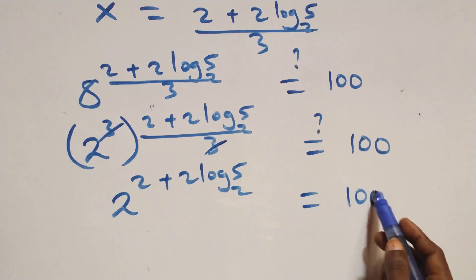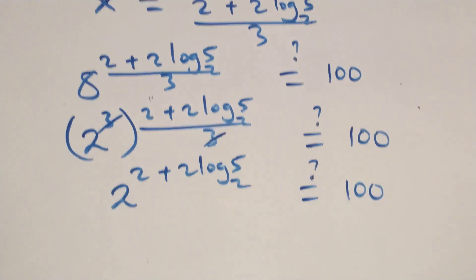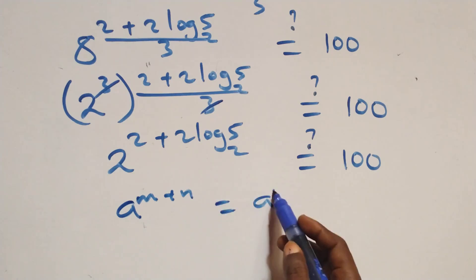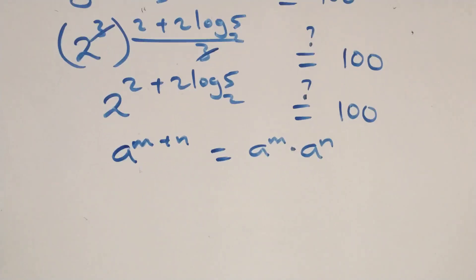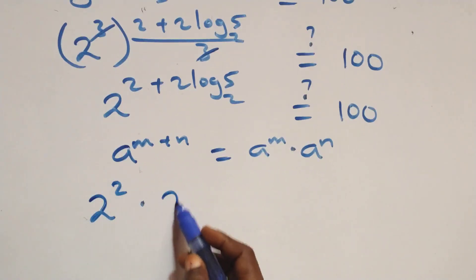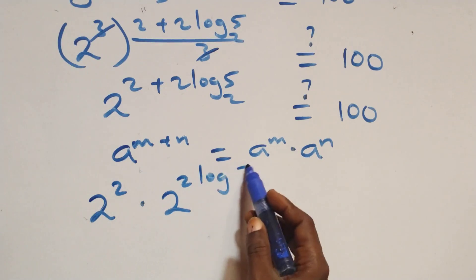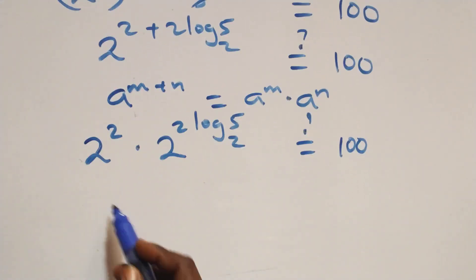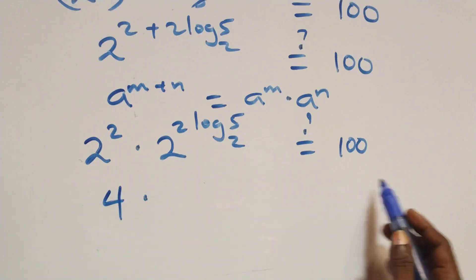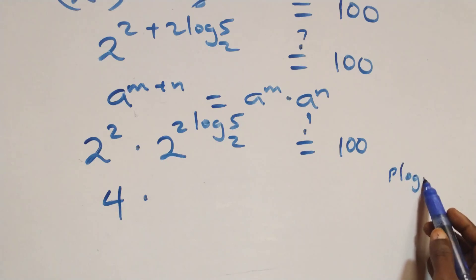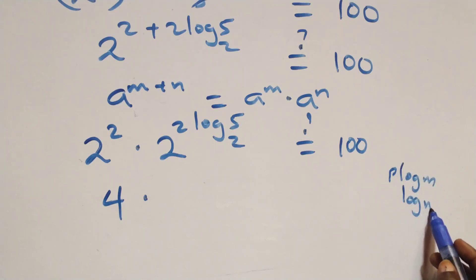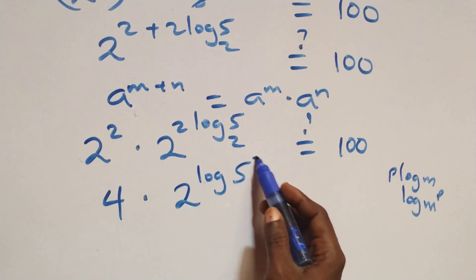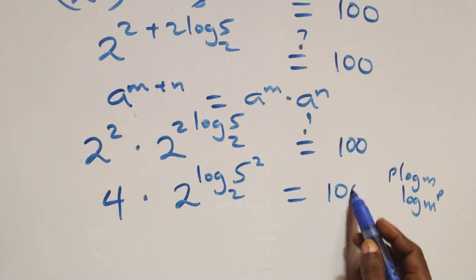This equals 100 on this side. Applying the rule a^(m+n) = a^m · a^n, we have 2 squared times 2 raised to power (2·log₂5) equals 100. Now 2 squared is 4. Applying the rule p·log m = log m^p, 2 comes out and we have 2 raised to power log₂(5 squared), which equals 100 on this side.